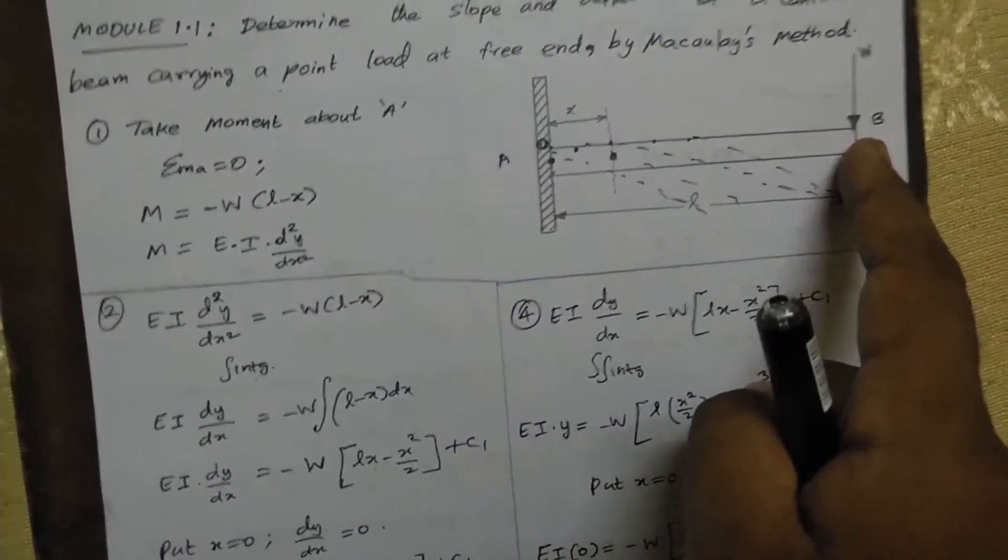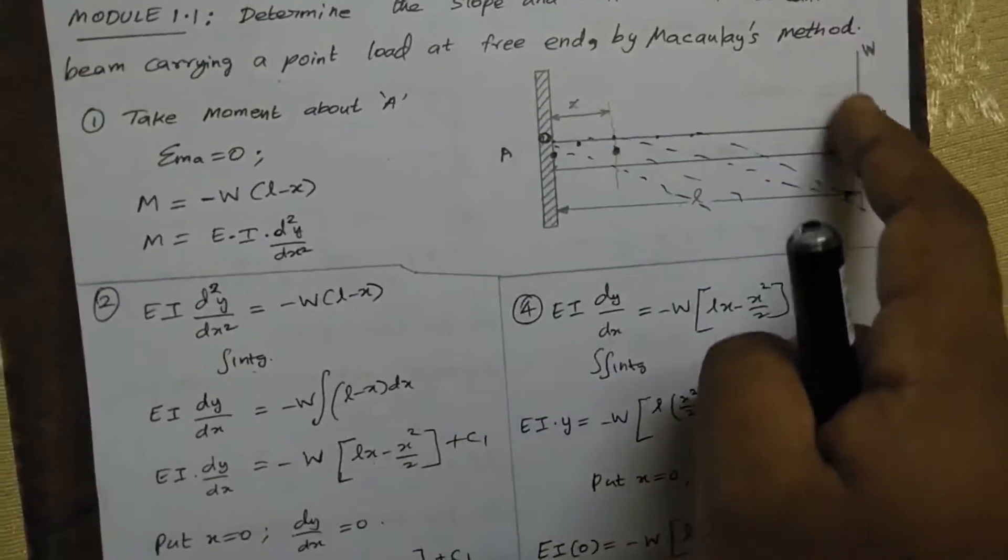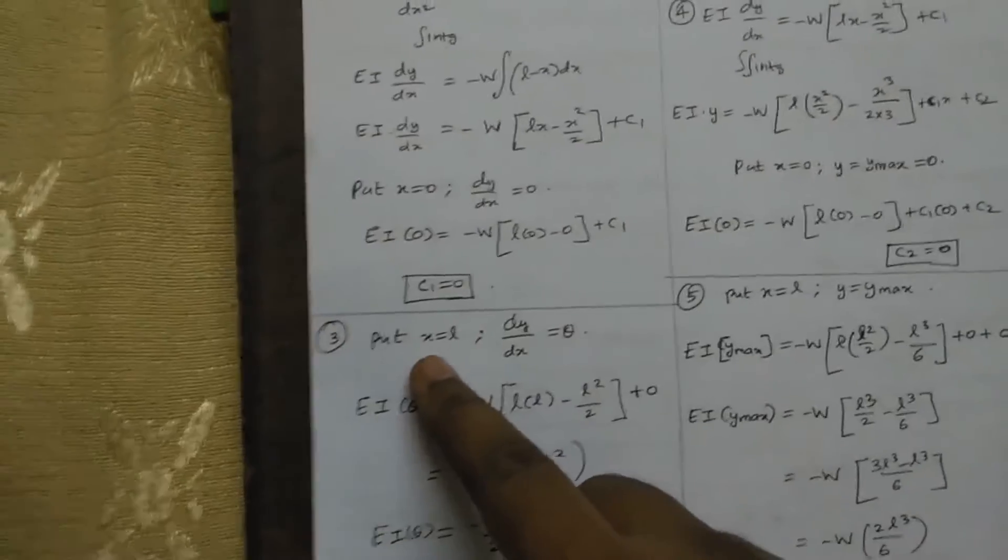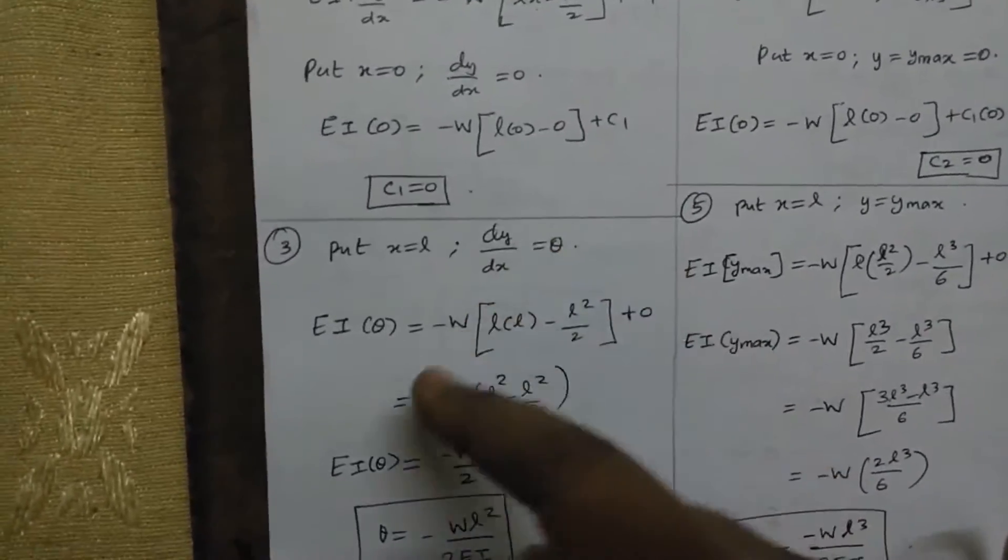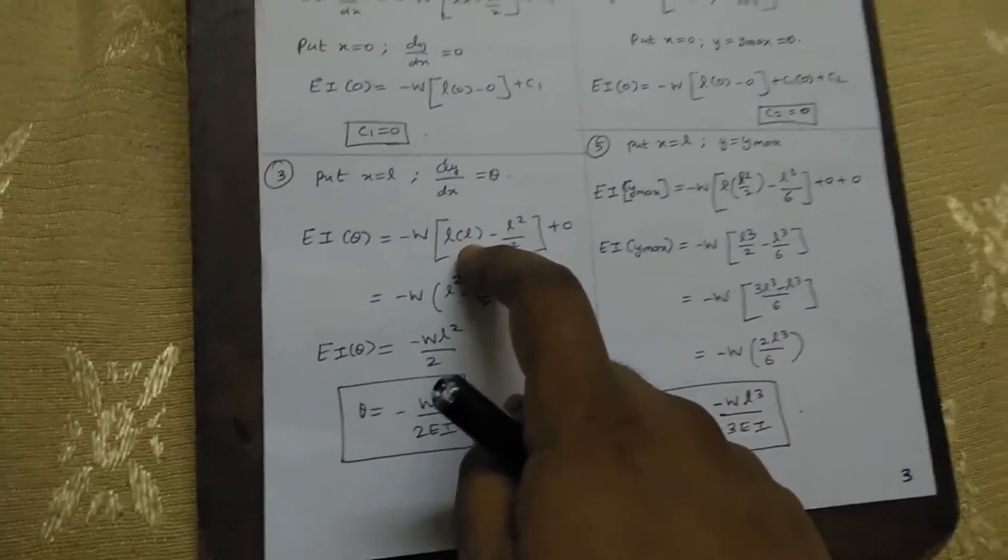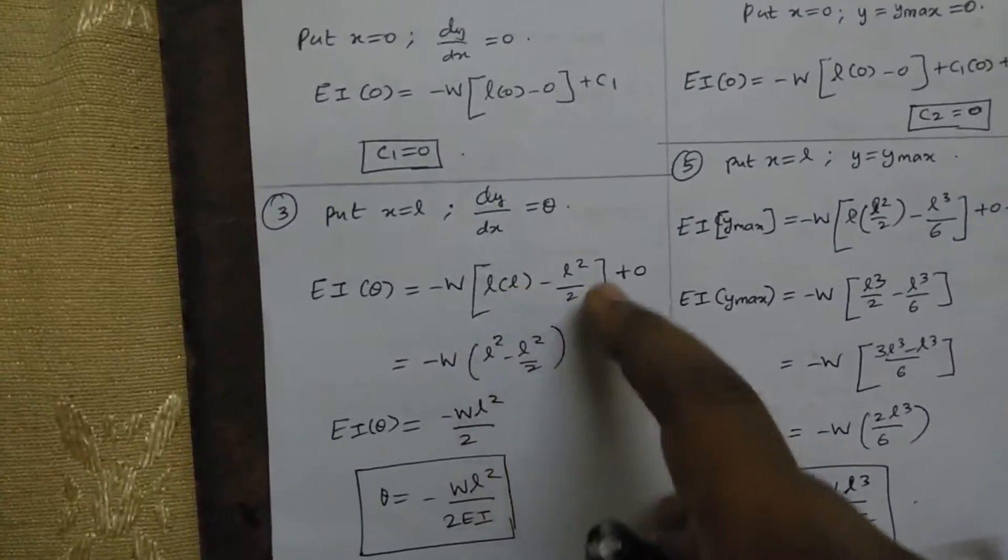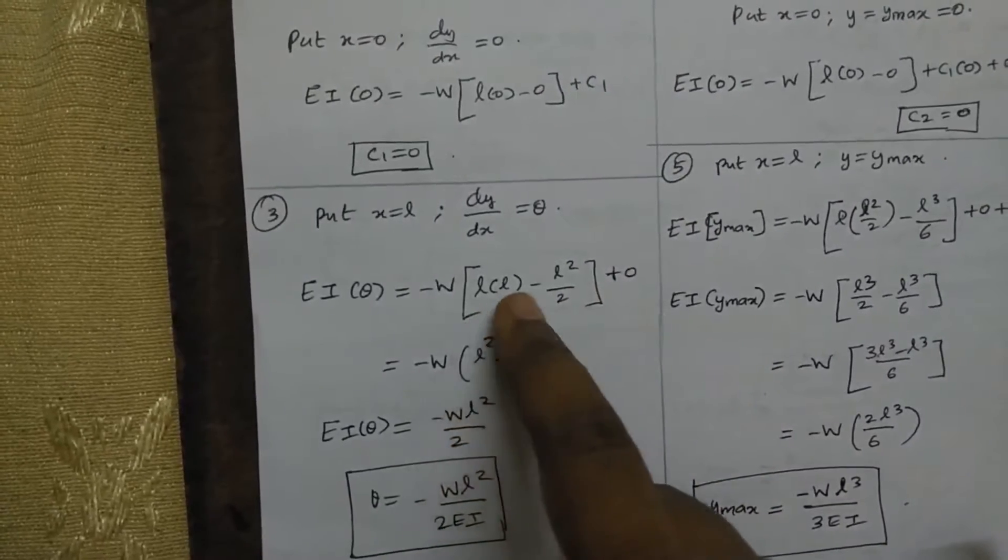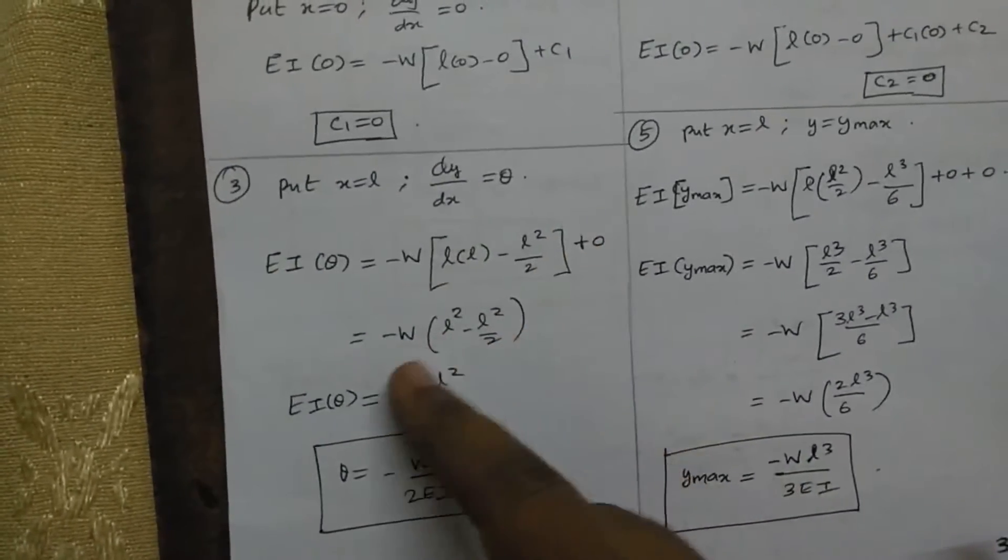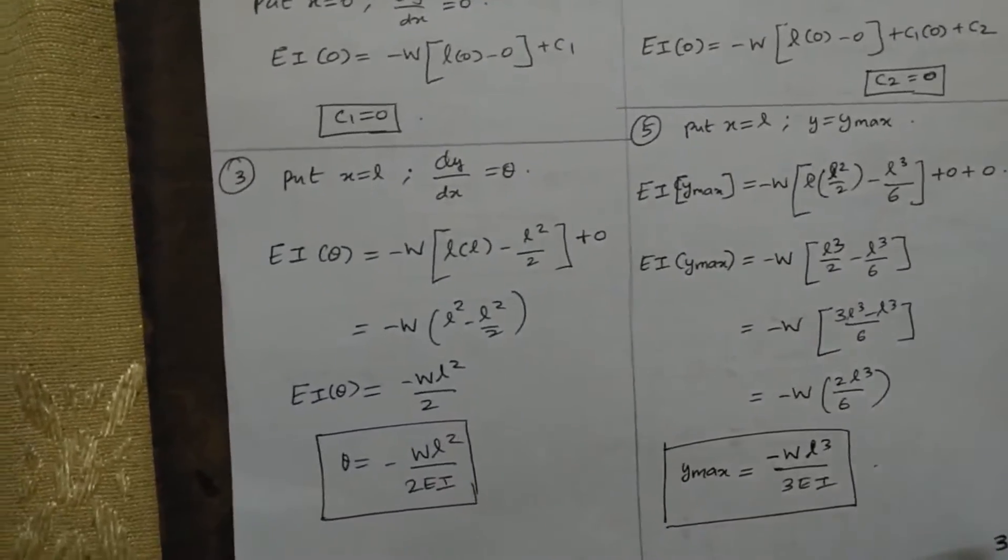Now put x equal to L. In the total distance, we take the value of x equal to L, and the slope which is equal to theta. So we have to calculate the value of theta.